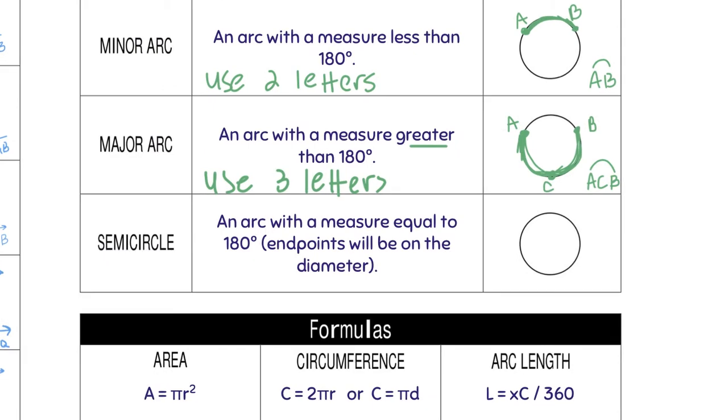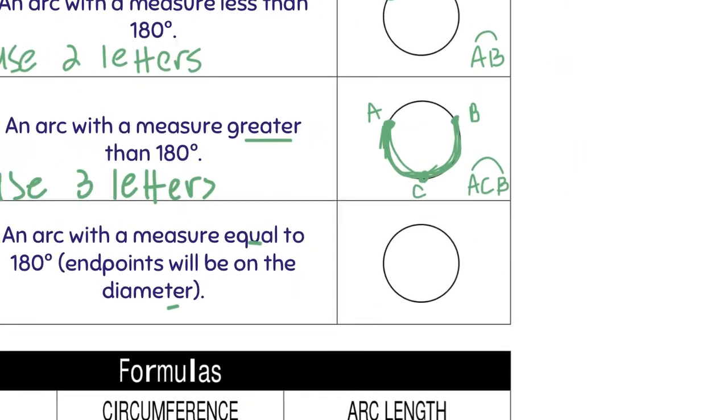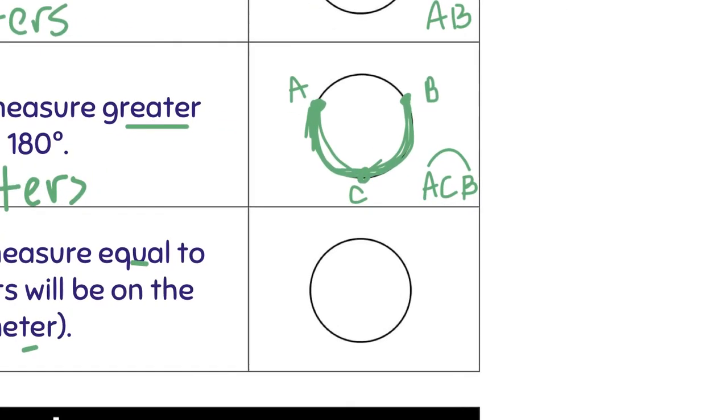Then we have a semicircle. So a semicircle is an arc with a measure equal to 180. So the endpoints are going to be on the diameter. So I know it's a diameter when it goes through the center, so there's my diameter. So each piece is a semicircle. A, B. And then, of course, on the other side, B, A. So it has to be exactly half.